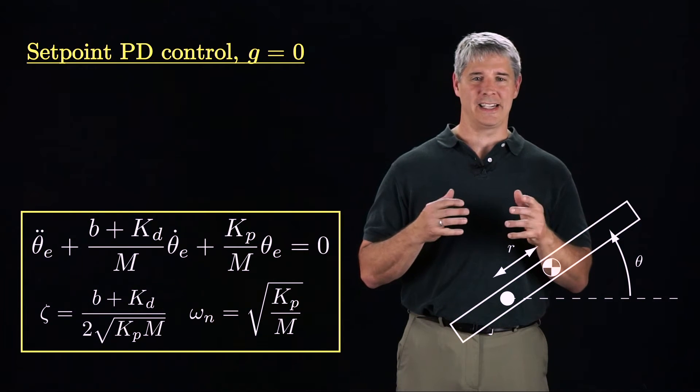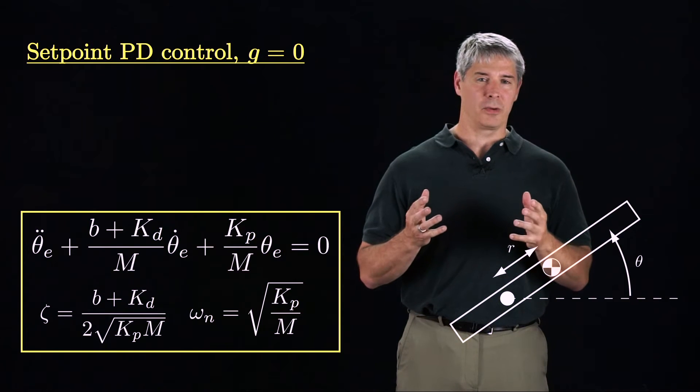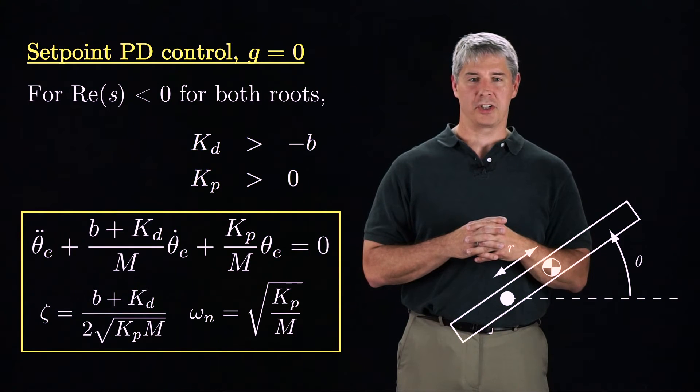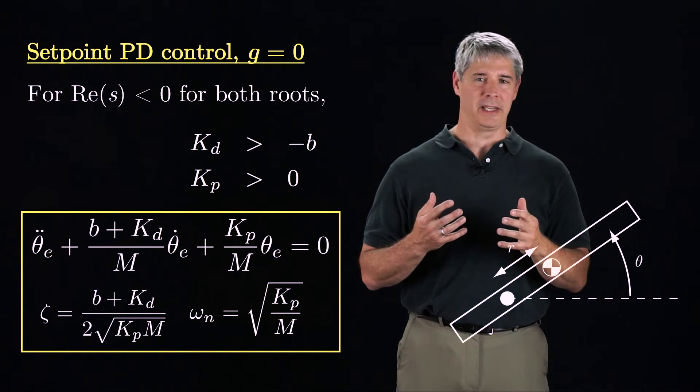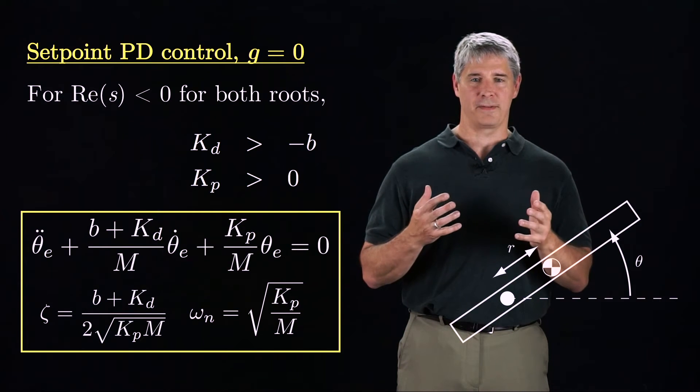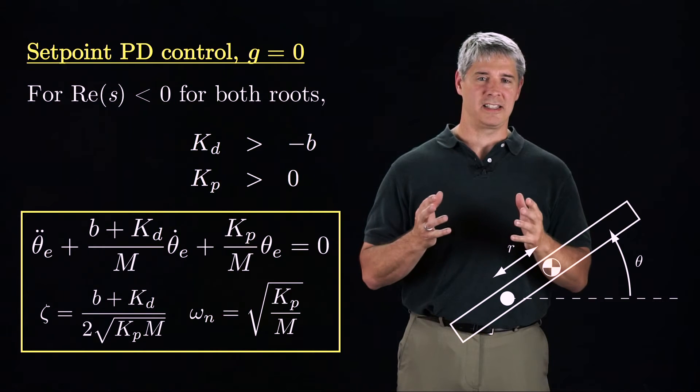We should choose kd and kp to at least make the error dynamics stable. In other words, the roots of the characteristic equation must have a negative real component, which is assured if kd is greater than negative b and kp is greater than zero. If these conditions are satisfied, then because the differential equation is homogeneous, the steady-state error is zero.